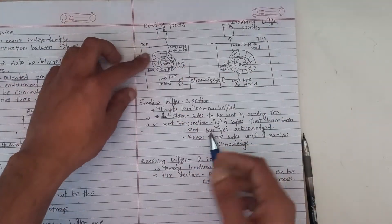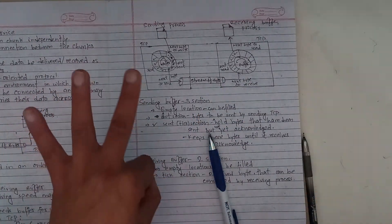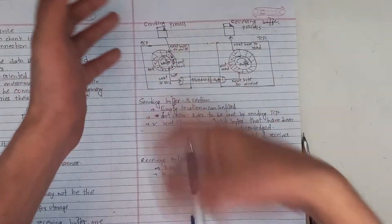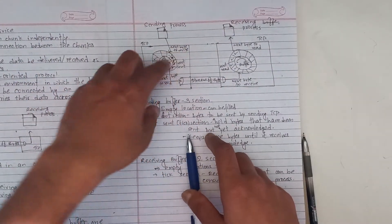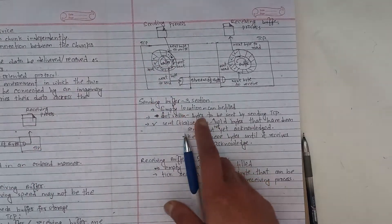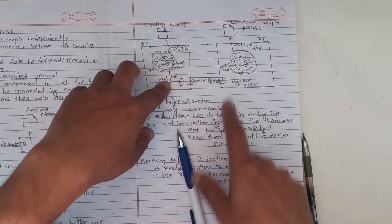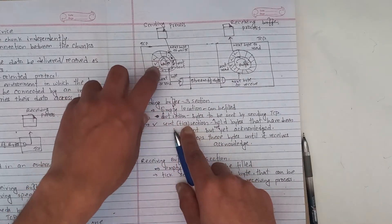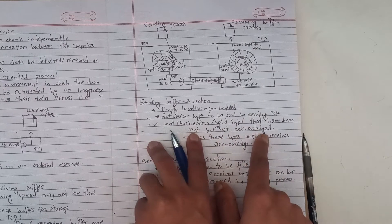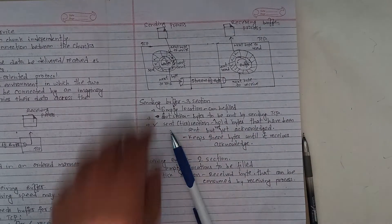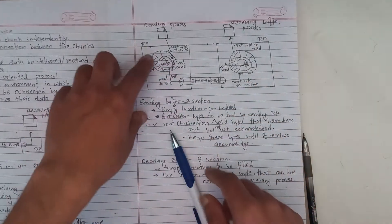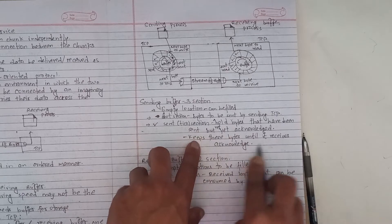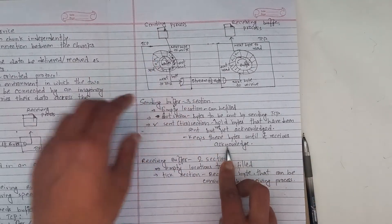The sending buffer has three sections. You can see the empty locations. The data from the sending process connects byte by byte. You can keep data in the sending process to be sent by TCP. You can also see the bytes that have been sent but not yet acknowledged. Those bytes are kept in the sending buffer until an acknowledgement is received.